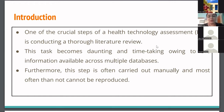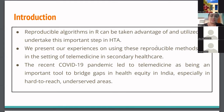This step is often carried out manually and most often it cannot be reproduced. The idea of using R for the first time in trying out systematic review here is because we wanted it to be reproducible. Reproducible algorithms in R can be taken advantage of and utilized to take this important step in HTA.